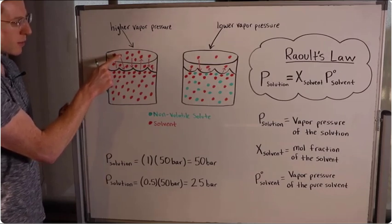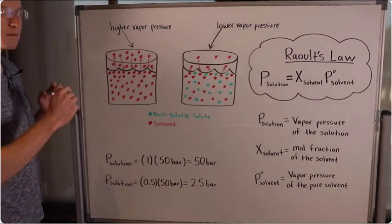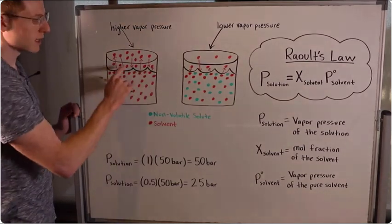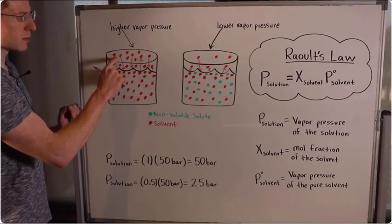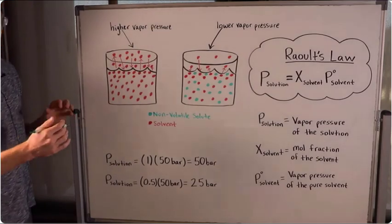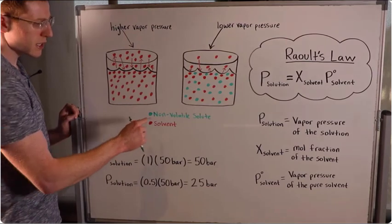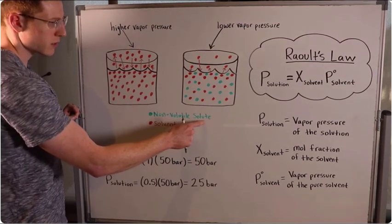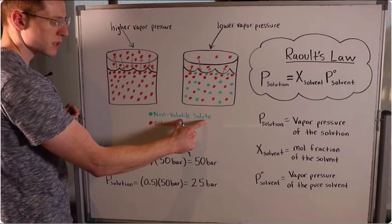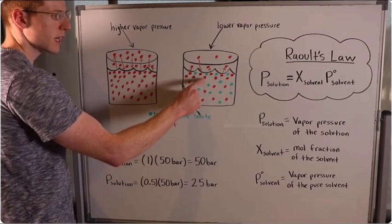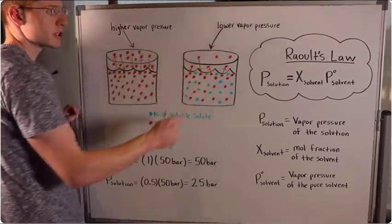Every time one of the vapor molecules returns to the liquid, that is condensation. This is happening many, many times per second at the surface of this liquid. All of this bouncing around of molecules as vapor creates a pressure — we call that the vapor pressure. What Raoult's Law says is that if you add in a non-volatile solute — something that we dissolve into the solution that can't evaporate at the surface like the solvent molecules can — then you lower the vapor pressure.